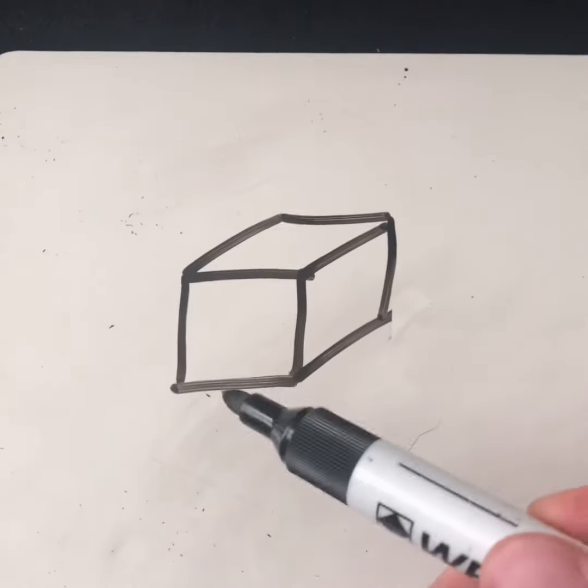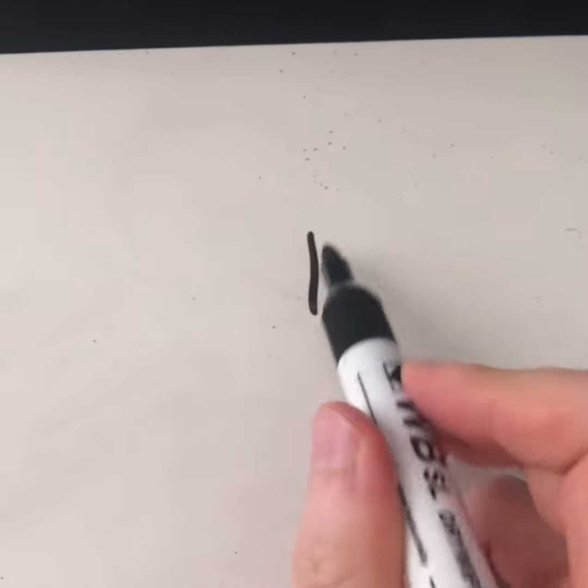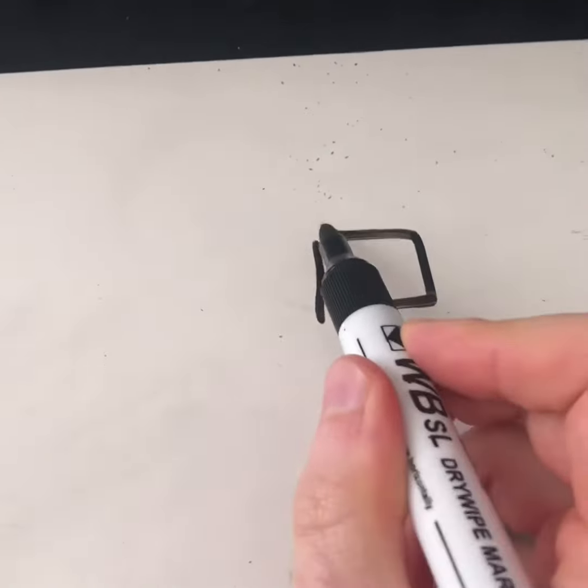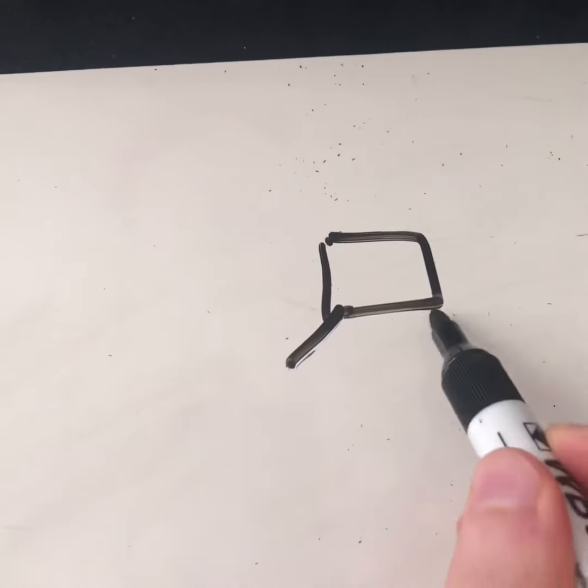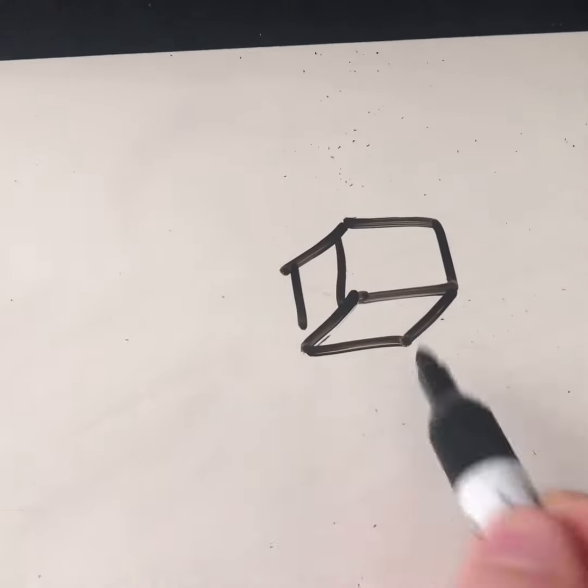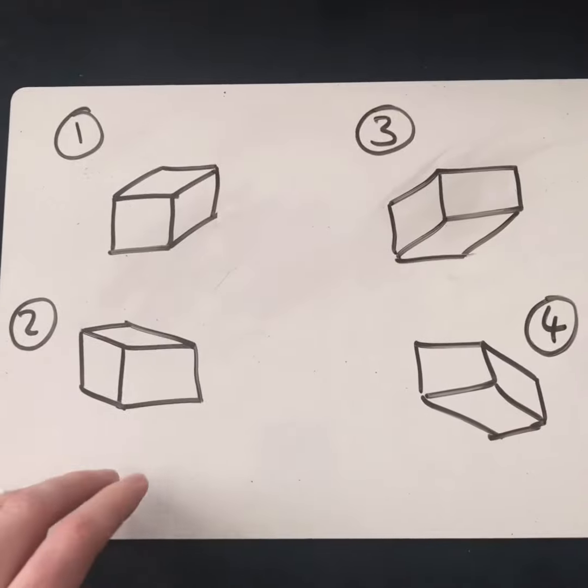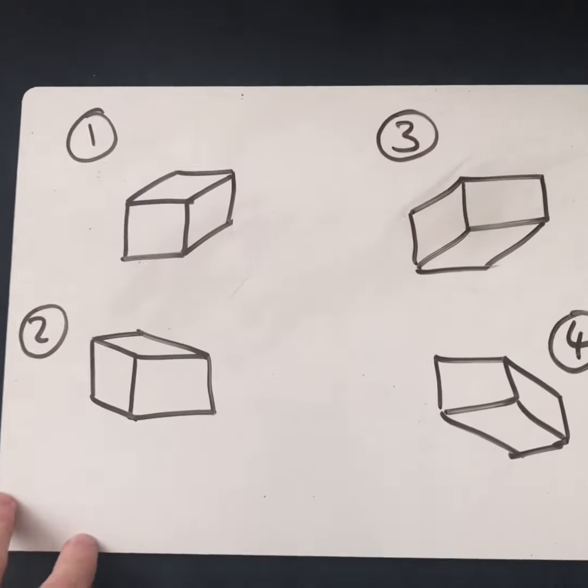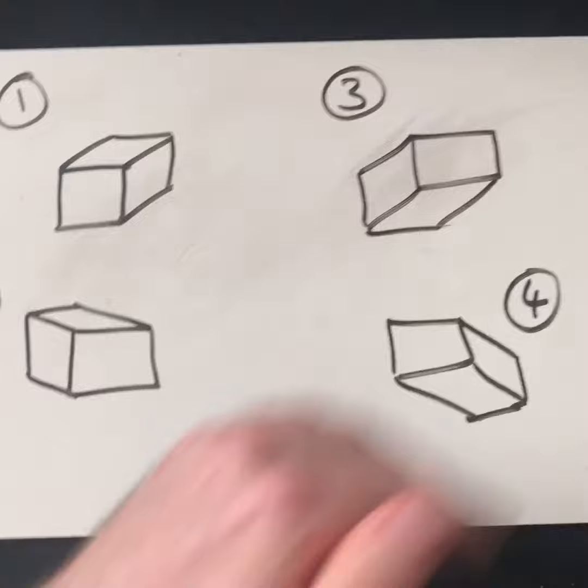Once you get good at drawing them you can try them at different elevations - that means we're using three different corners and going in a different direction, something a little bit like this. Being able to do this is great if you ever want to do product design or design a phone and look at it from different angles.